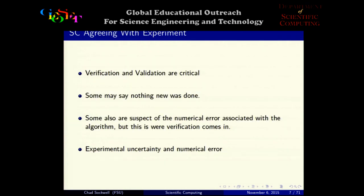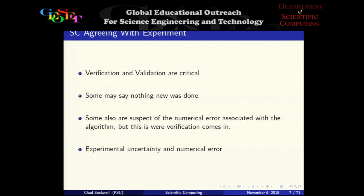Most importantly, you need to get your simulation to agree with an experiment to verify your code and prove that it's correct. This is known as verification and validation, and it's extremely critical. Some scientists may scoff and say nothing new was done — you've just reproduced something done by hand — but this is actually a critical stepping stone to show your code works, and once you know it works, you can make predictions with it. If you can make your numerical error smaller than the experimental uncertainty of your measuring device, you can faithfully reproduce physical results.